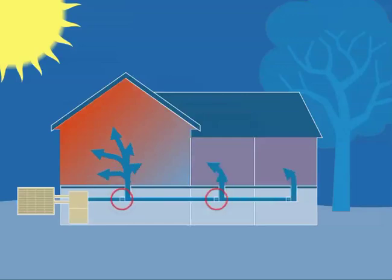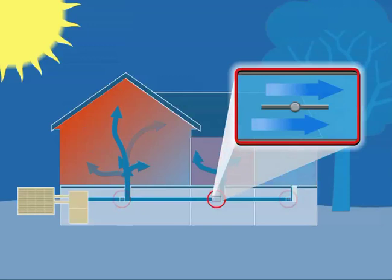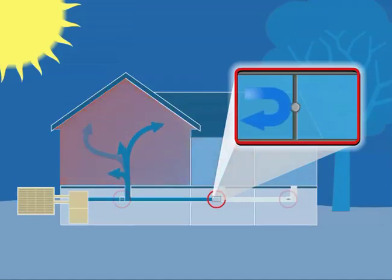In a zoned system, dampers automatically turn the airflow on and off to certain rooms or zones so that each area remains at your preferred temperature.